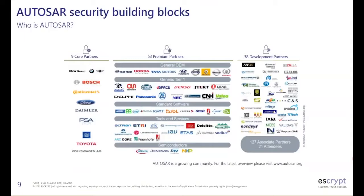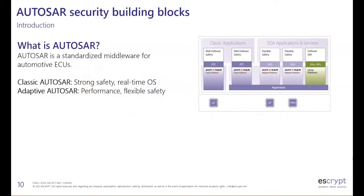A few words about AUTOSAR in general. AUTOSAR is an industry consortium consisting of over 200 partners — basically every major automotive OEM and Tier 1 is a member. It comes in two variants: Classic AUTOSAR, focusing on typical automotive use cases like safety and real-time, and Adaptive AUTOSAR, focusing on new use cases like connectivity and automated driving, supporting more performance-oriented scenarios while still providing safety to a certain extent.